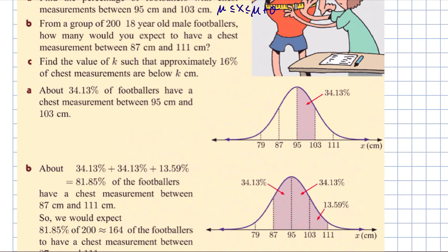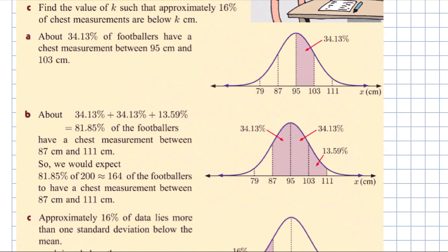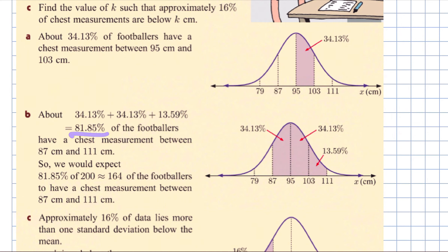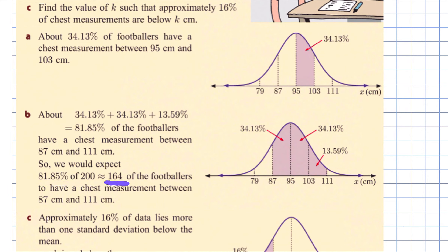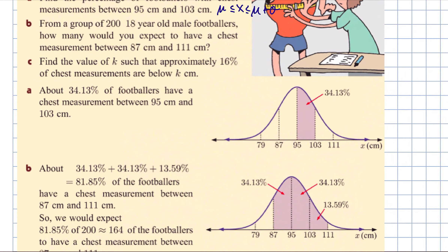The second question says: from a group of 200 eighteen-year-old footballers, how many would you expect to have chest measurements between 87 and 111? Looking at the diagram, 87 is one standard deviation below the mean and 111 is two above, so they've added those three areas together to get 81.85%. With 200 footballers, that's 81.85% of 200, which is approximately 164. Since we can't have a decimal of a footballer, we round to a whole number.